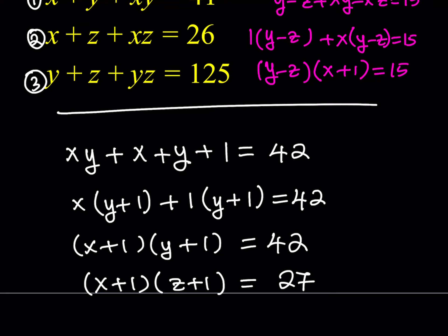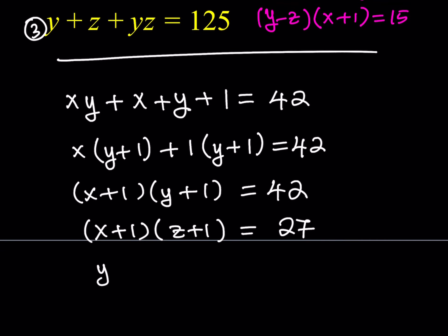Now for the third equation: y plus z plus yz — writing yz first gives yz plus y plus z plus 1, which factors as (y plus 1)(z plus 1). Again don't forget to add one to both sides, so the right-hand side becomes 126. So from the third equation: (y plus 1)(z plus 1) equals 126.